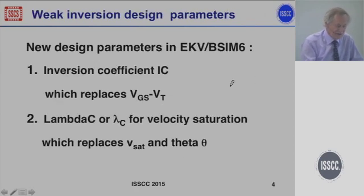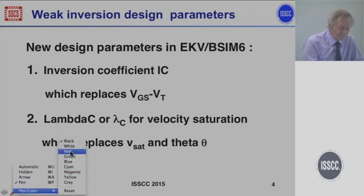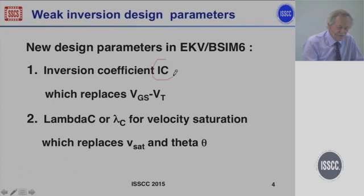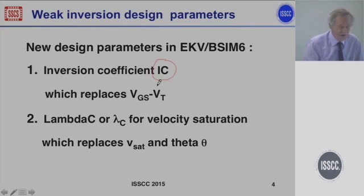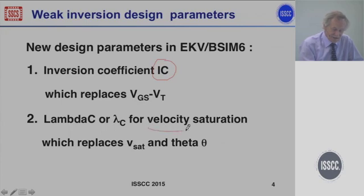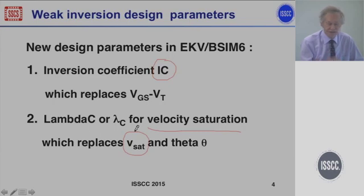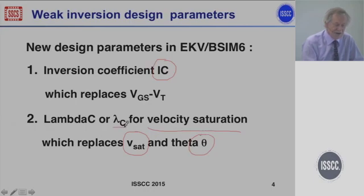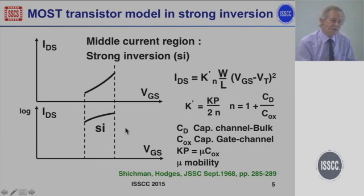The two parameters I would like to talk about are the inversion coefficient, which is going to replace the VGS minus VT — the conventional overdrive voltage you used to bias a transistor — and the other one represents velocity saturation, which is something like 10 to the 7 cm per second, used in circuitry by theta. All that is now replaced by lambda C. How are those two parameters going to be determined when you make an amplifier? I'll start off with a little bit of modeling.